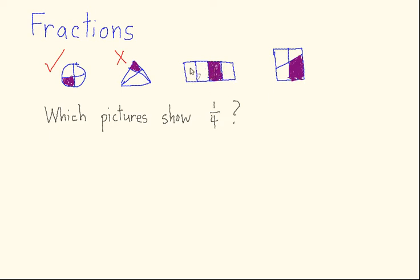How about this third shape? Here's a rectangle, and with this rectangle I've divided it up into four equal-size rectangles by drawing a line in half and then dividing the halves again in half. So if you thought this represented one fourth, you'd be right.